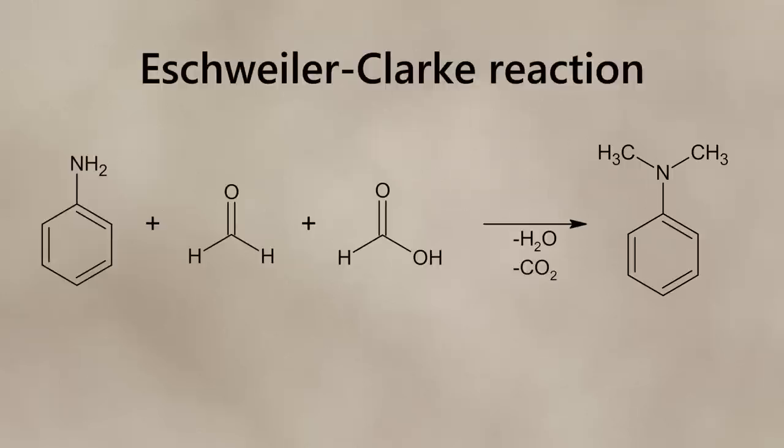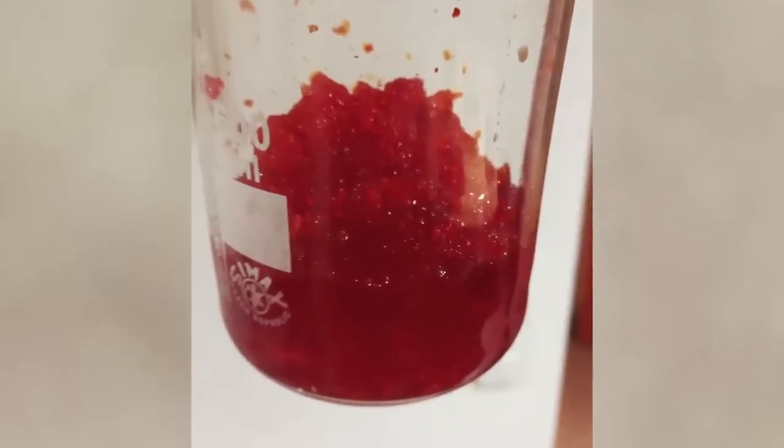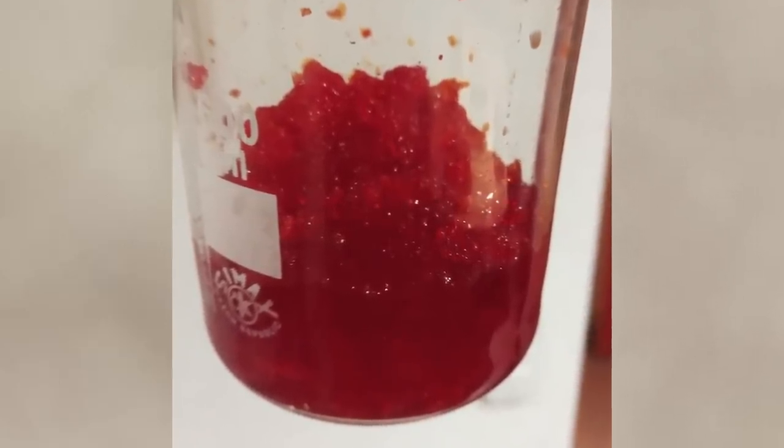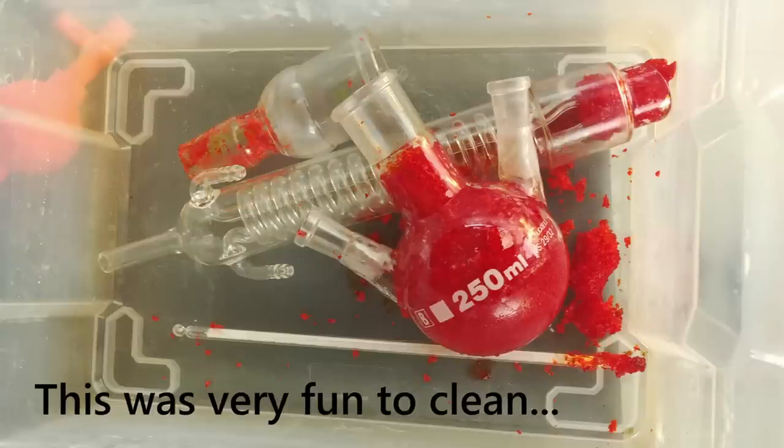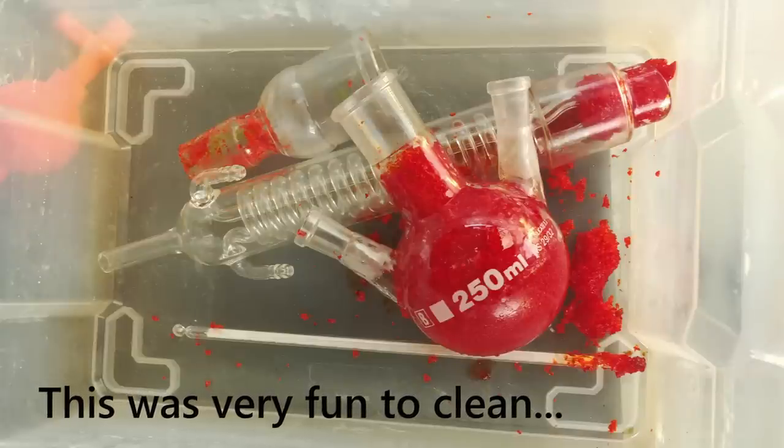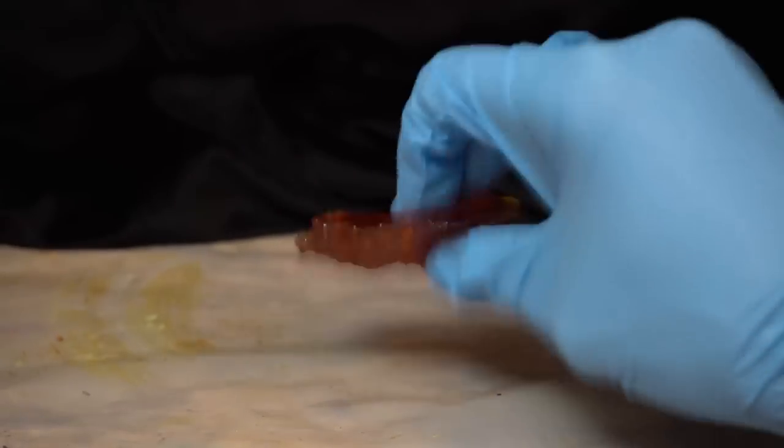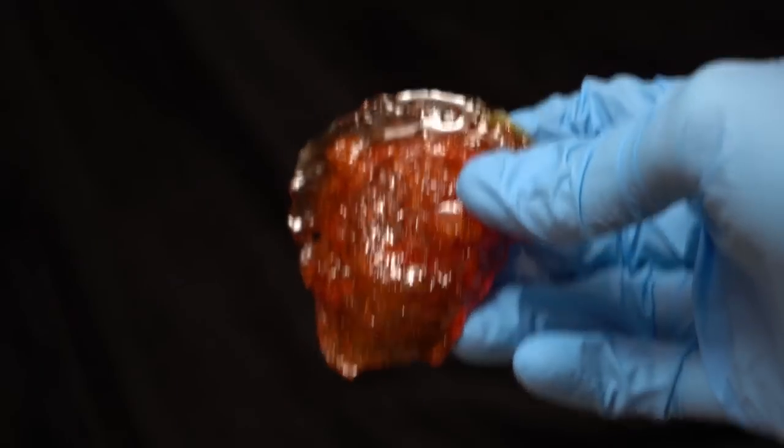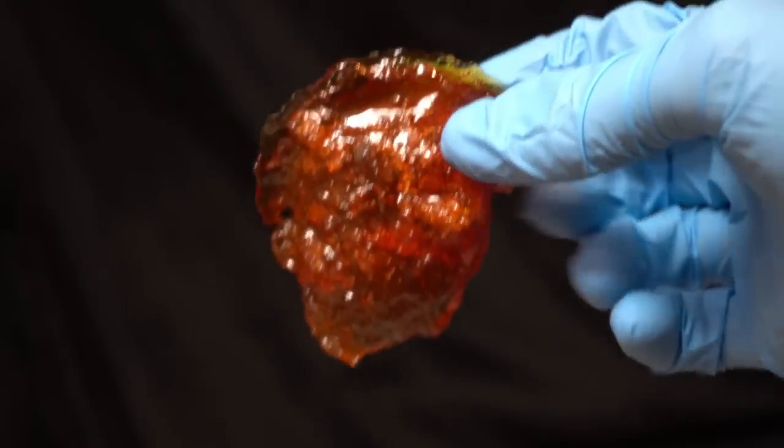My first attempt was an Eschweiler-Clarke reaction on aniline, which is a form of reductive methylation using formaldehyde and formic acid as the reducing agent. Unfortunately the reaction immediately polymerized into a soft jello-like substance, and upon drying it solidified into this plastic block. This is pretty cool but not what I wanted.